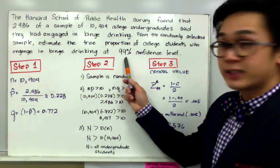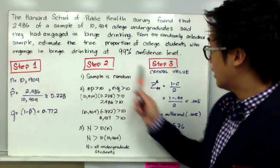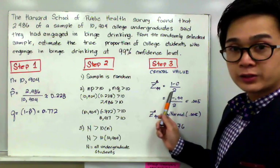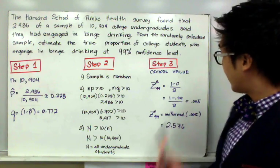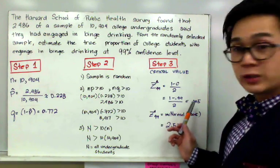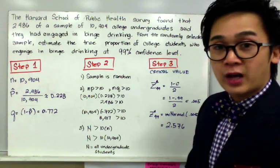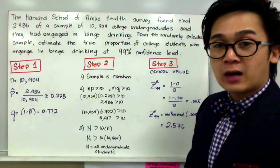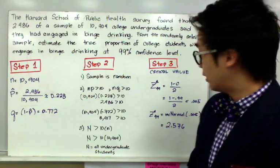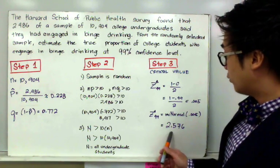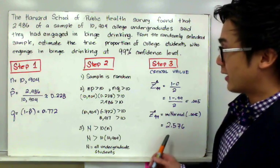We have Z star of 99% confidence level, which is 1 minus C all over 2. Using the formula, we'll get 0.005, which we will use for our Z star, which we can find using our calculator or Z table. Z star of 0.99 will give us 2.576.